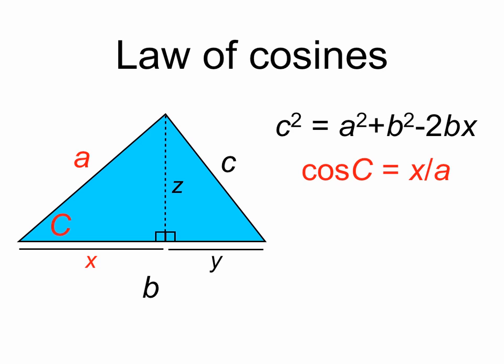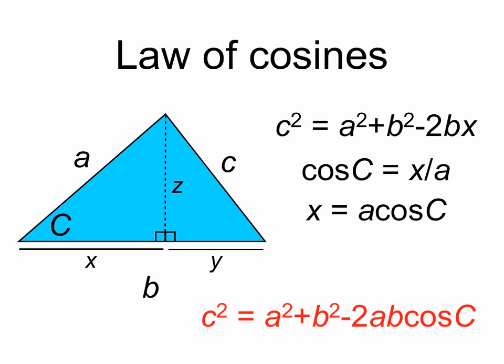We'll note that the cosine of C is equal to x over a. And so x = a cos C. And we can substitute this back in to get the law of cosines: c² = a² + b² - 2ab cos C.